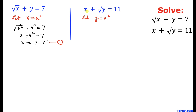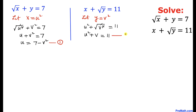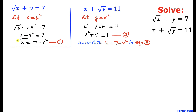Now focusing on the second equation: x is u squared, so we write u squared plus square root of y, replacing y by v squared, equals 11. The square and square root cancel, giving us u squared plus v equals 11. Let's call this equation number two.